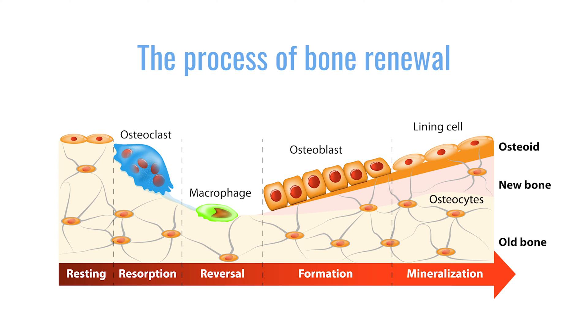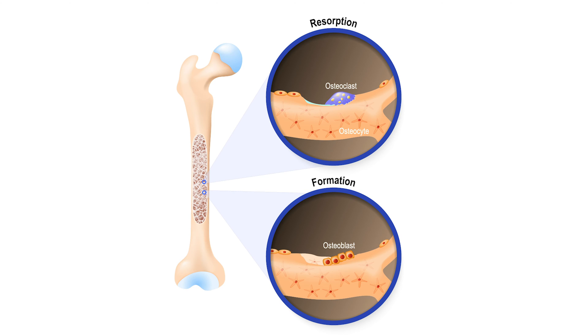It's been known for many years that myeloma cells seem to stimulate normal bone cells called osteoclasts to break down bone. In a healthy individual, bone is constantly being renewed by cells that destroy and rebuild it to keep bones healthy and strong. Osteoclasts break down bone and are followed by bone-forming cells called osteoblasts. However, in myeloma, osteoclasts are stimulated to break down more than they should.